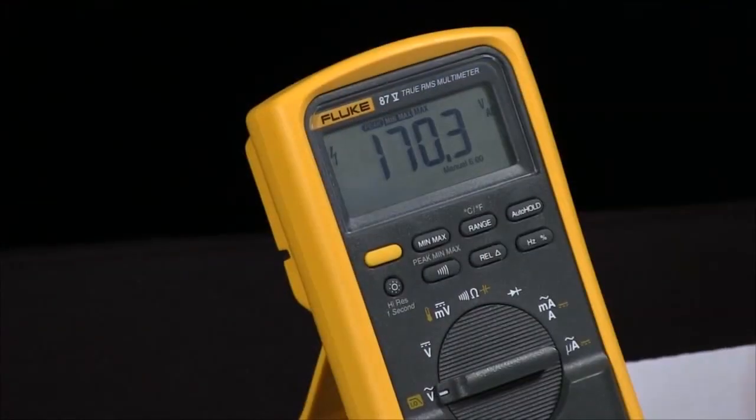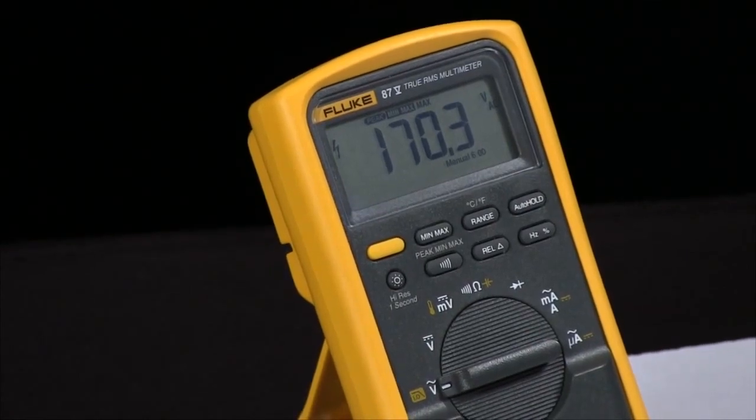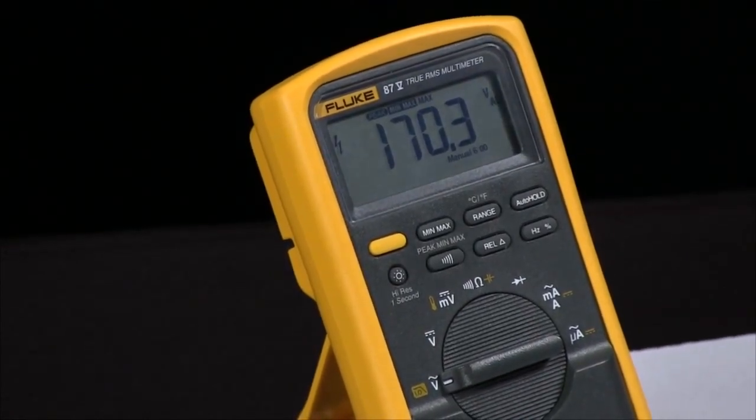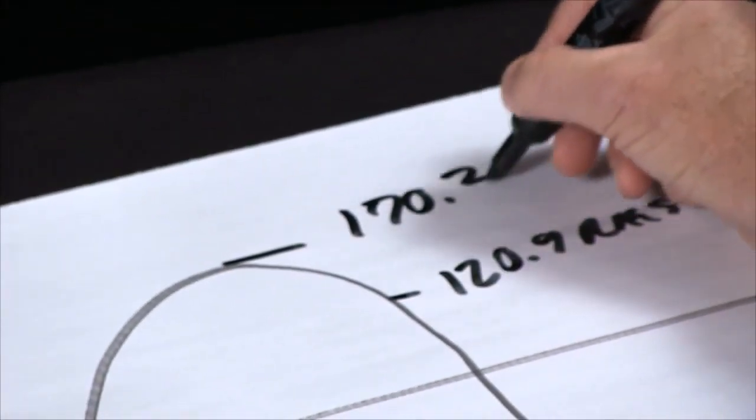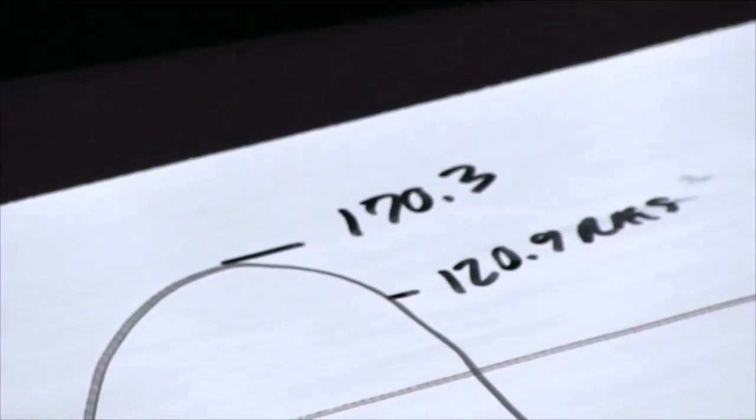By hitting the min-max and then the peak min-max, I put the meter into peak min-max mode, which shows me we have a peak of 170.3.